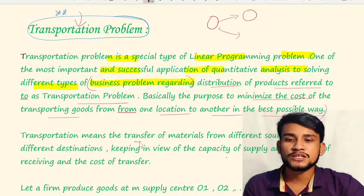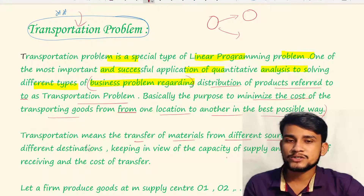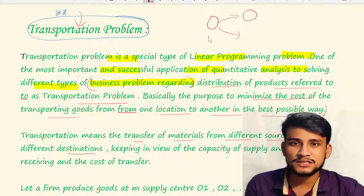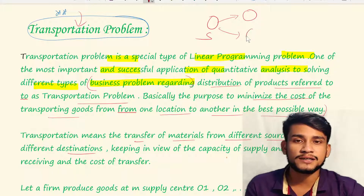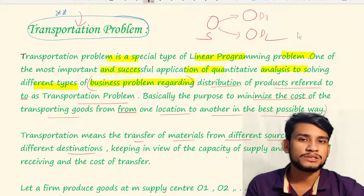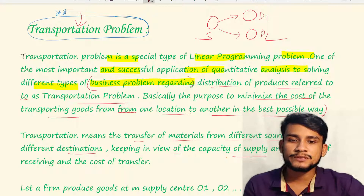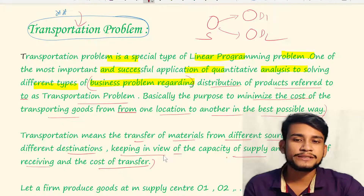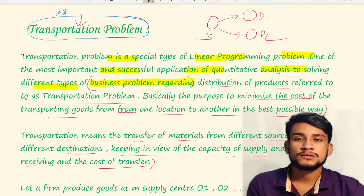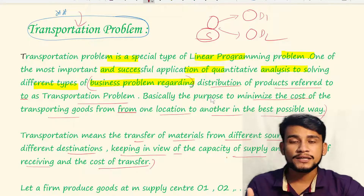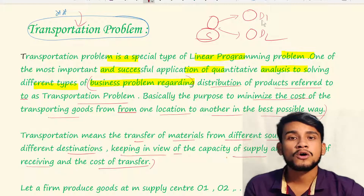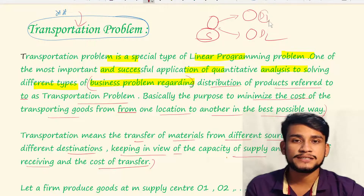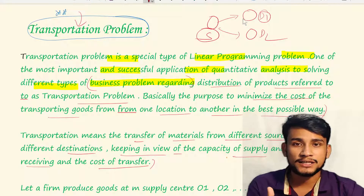Transportation means the transfer of materials from different sources to different destinations. Suppose a company is the source and different cities are the destinations D1 and D2. We need to keep in view the capacity of supply, the capacity of receiving, and the cost of transfer — these are the basics.